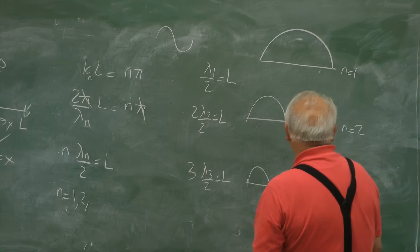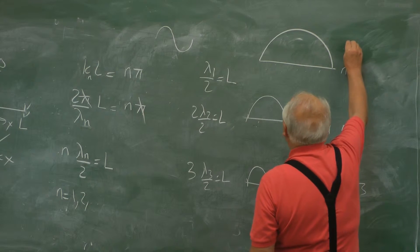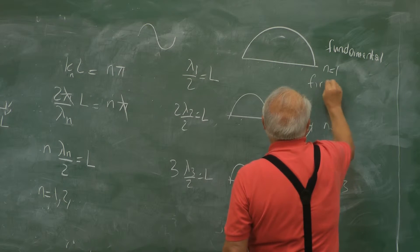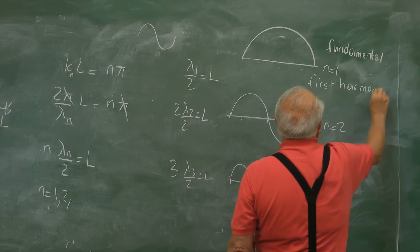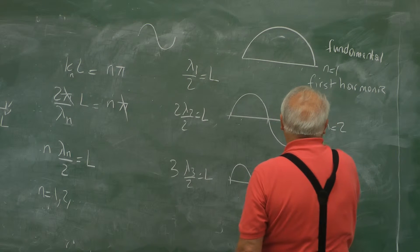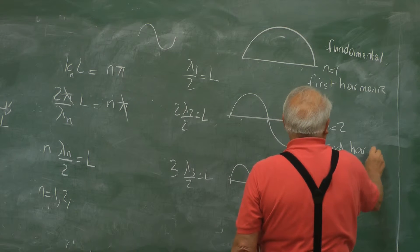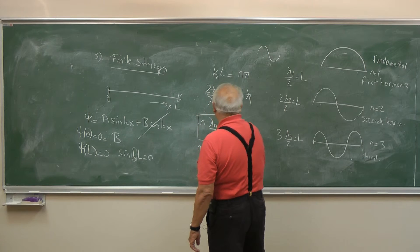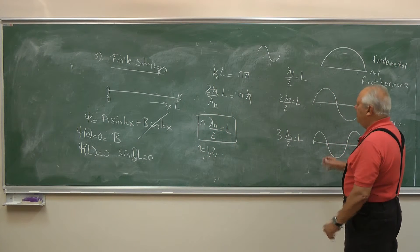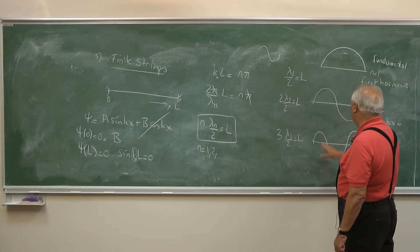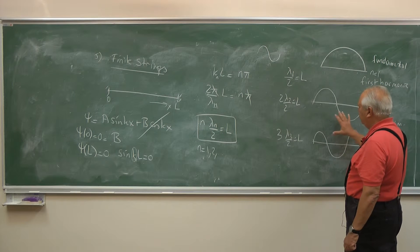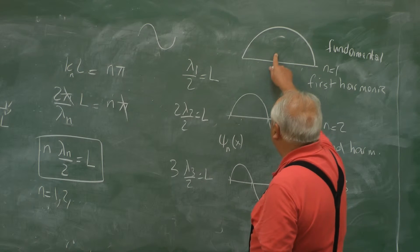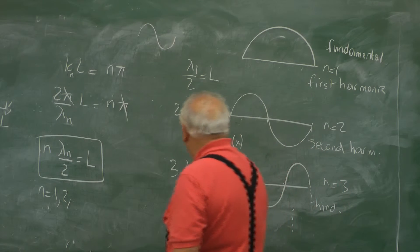And they have names. The first one is called fundamental or the first harmonic. The second one is called the second harmonic, third, etc. So the key equation is this: nλₙ/2 = L. Namely, you just fit for the nth normal mode n bubbles. That's it. That's the shape, ψ(x). Namely ψₙ(x), because this is the shape for n = 1, for n = 2, for n = 3, etc.